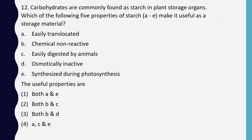Question 12. Carbohydrates are commonly found as starch in plant storage organs. Which of the following five properties of starch (A to E) make it useful as storage material? A: Easily translocated. B: Chemically non-reactive. C: Easily digested by animals. D: Osmotically inactive. E: Synthesized during photosynthesis. Correct answer is option 3: both B and D — chemically non-reactive and osmotically inactive — allow starch to serve as a storage substance.